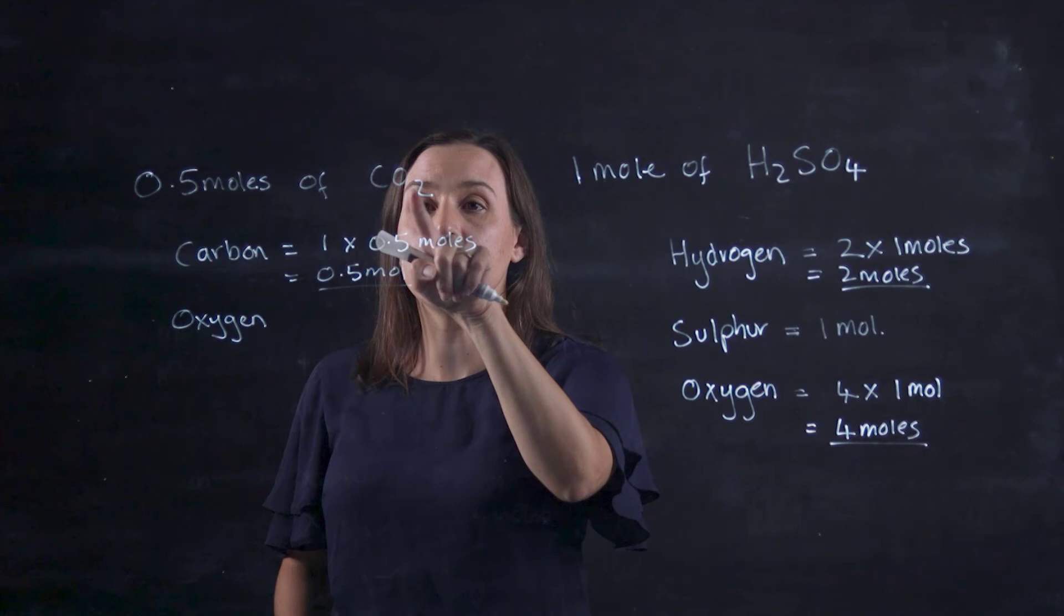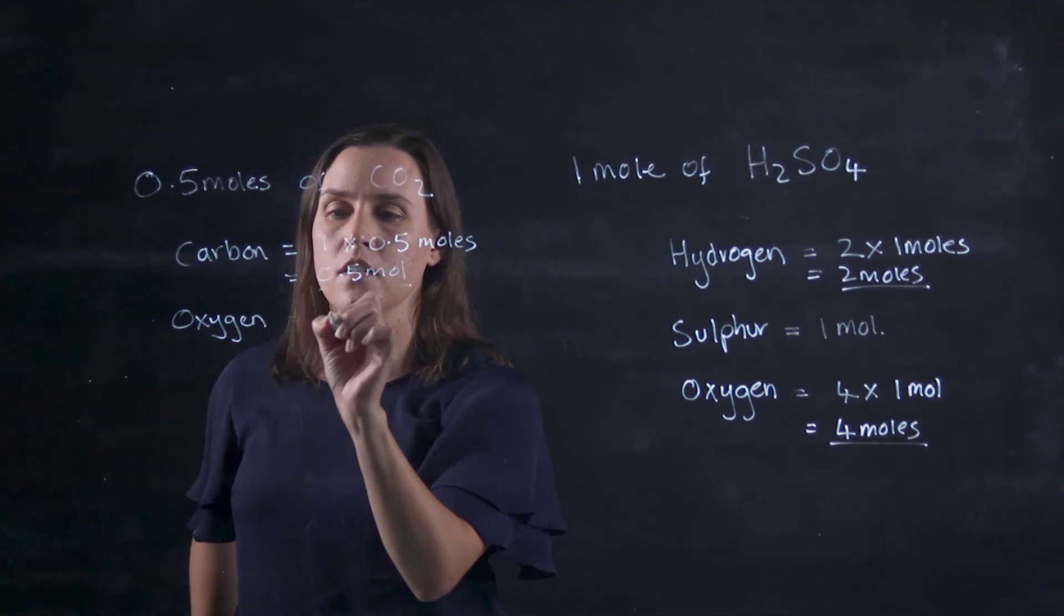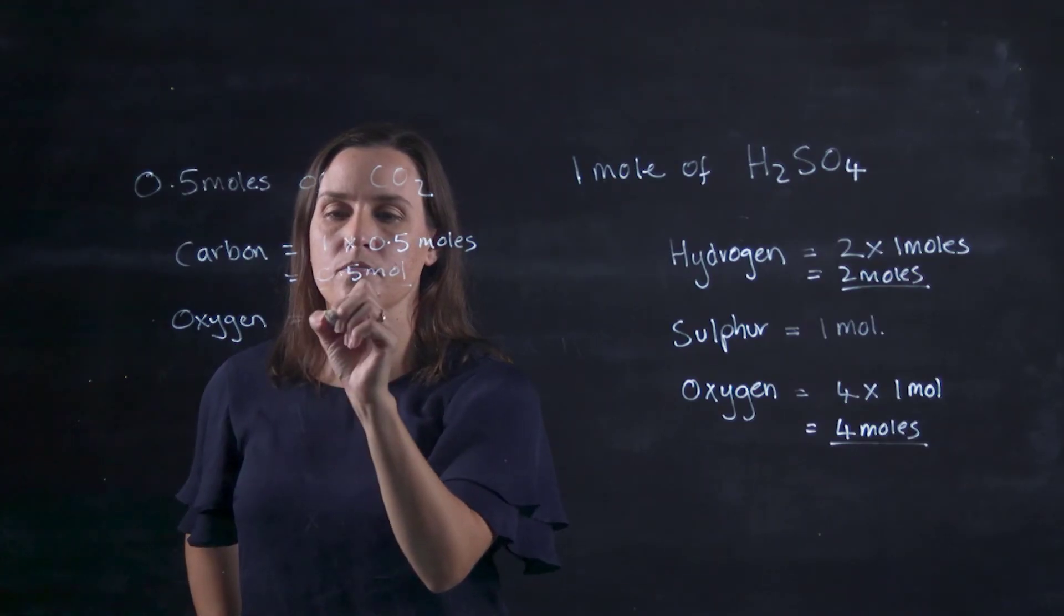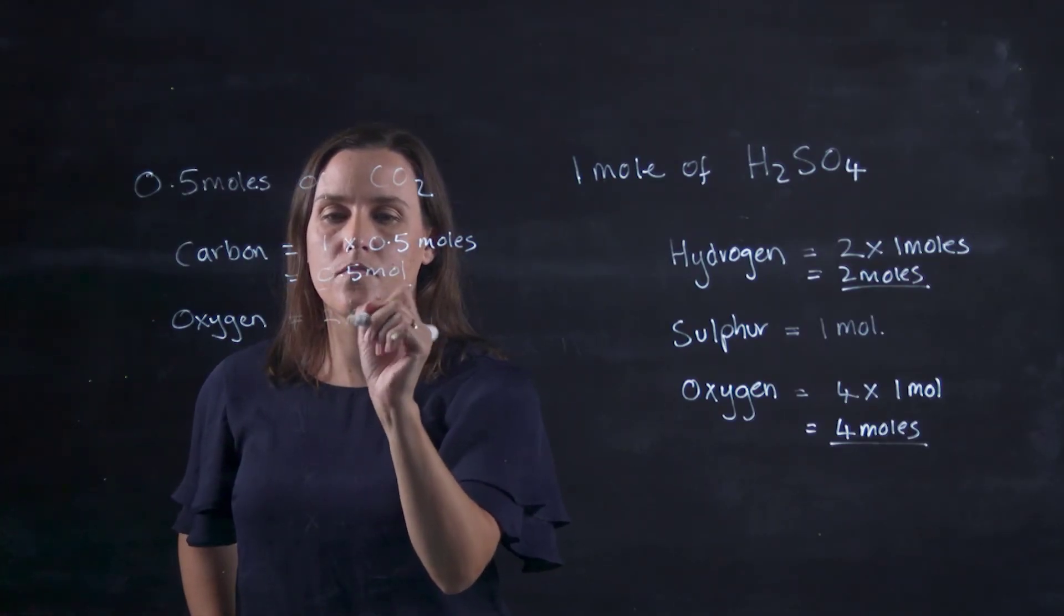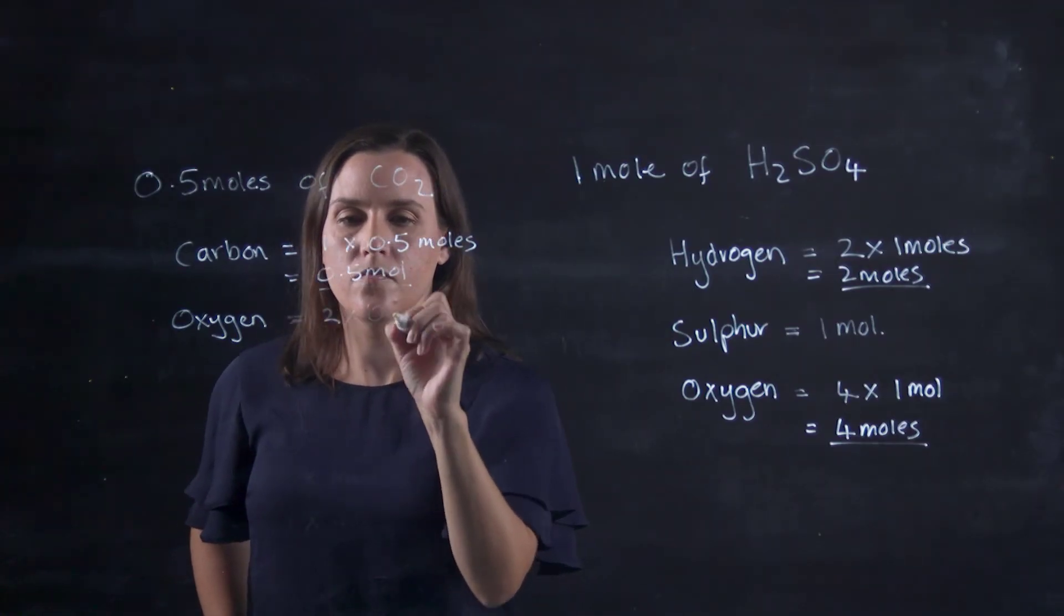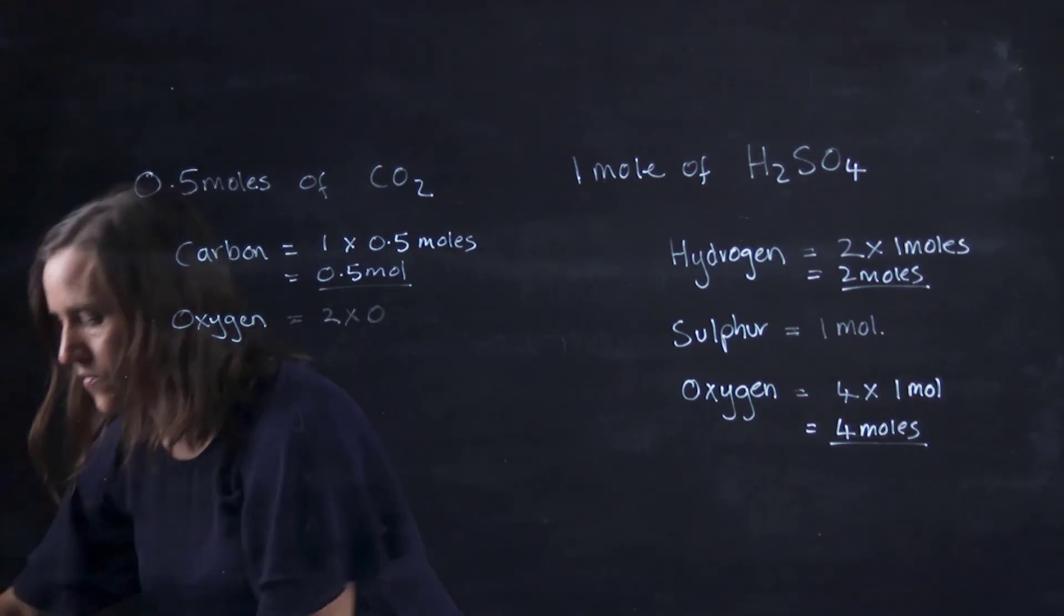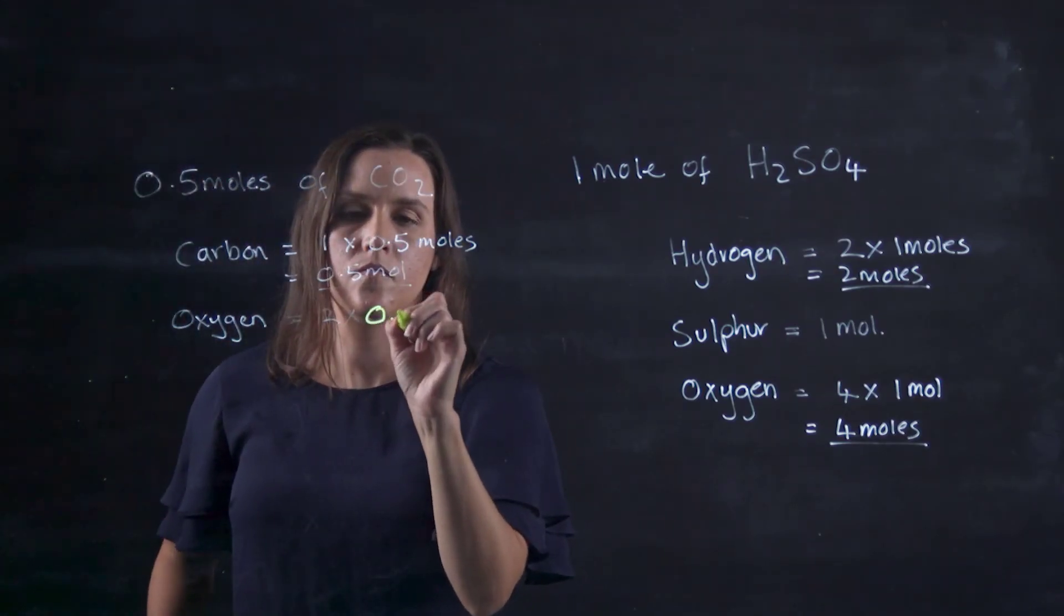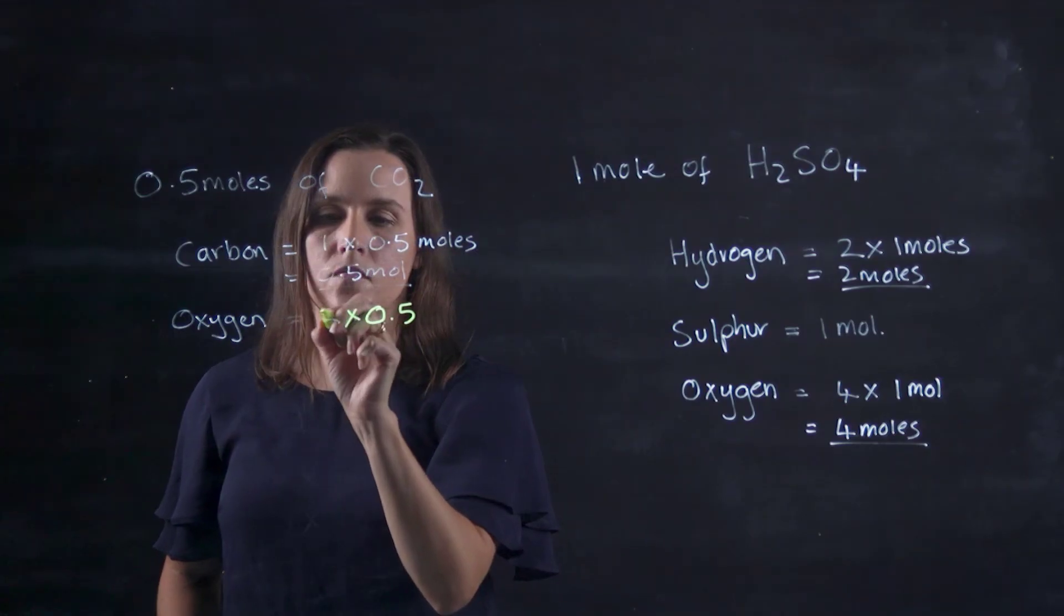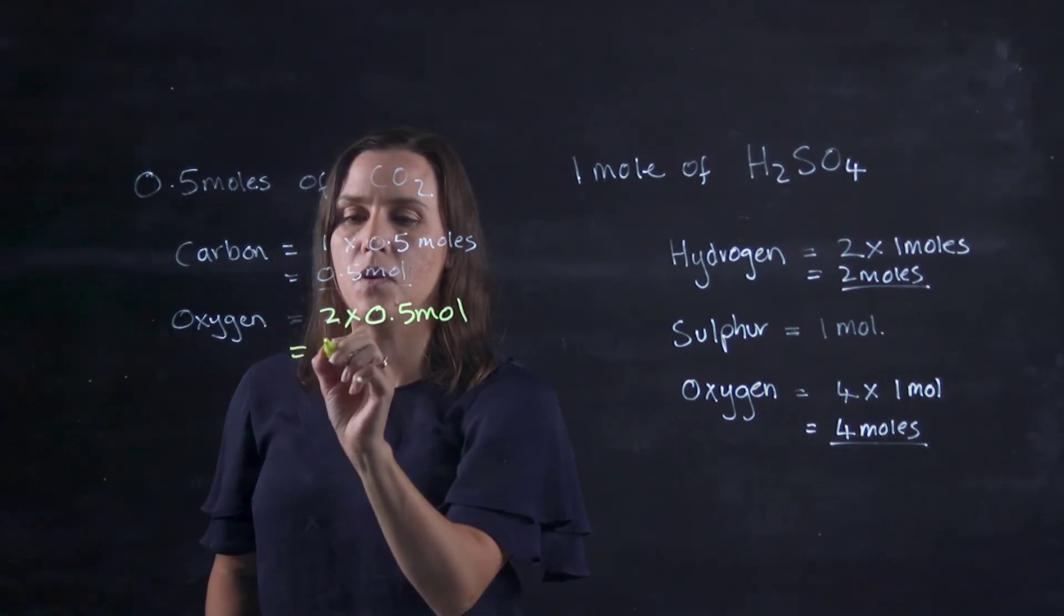And for the oxygen I've got two, so I've got two times 0.5. So two lots of 0.5 gives me one mole.